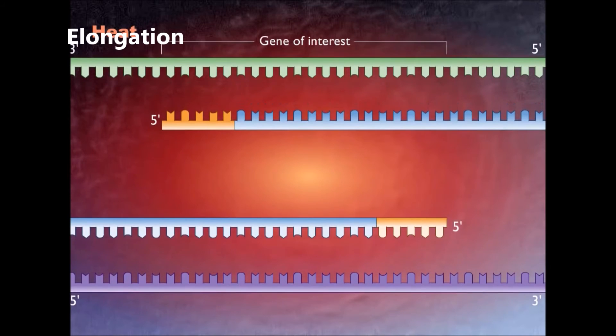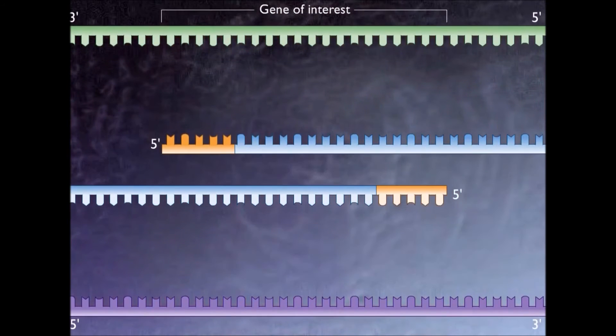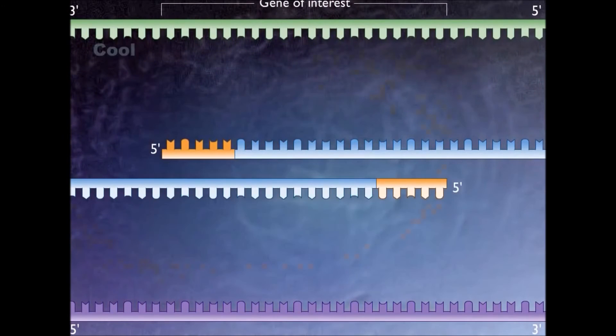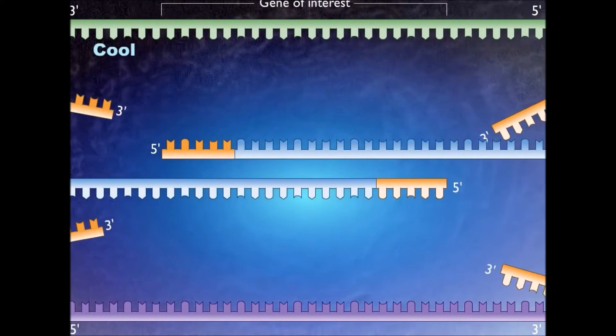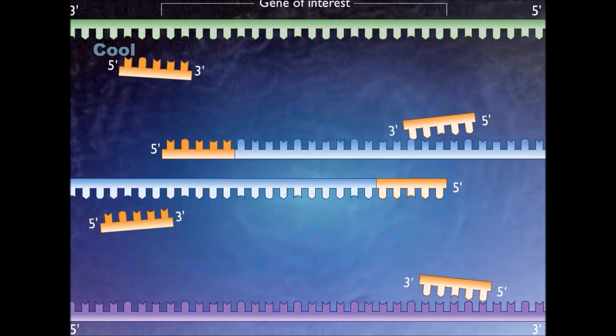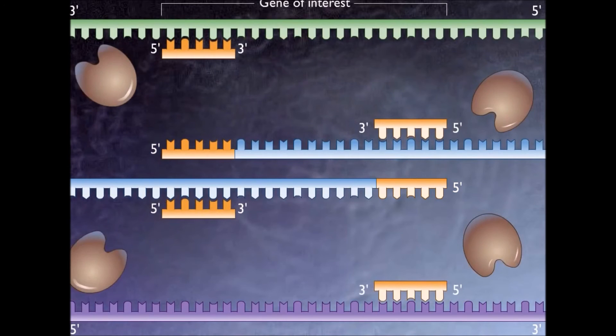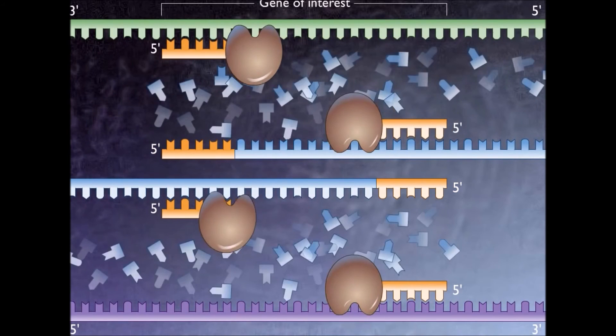Extension at 72 degrees Celsius. This is the ideal working temperature for the polymerase. The primers, where there are a few bases built in, already have a stronger ionic attraction to the template than the forces breaking these attractions.